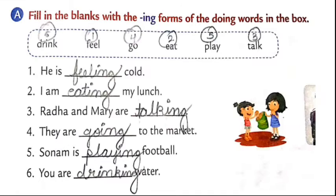Now open page number 61 and see exercise A: fill in the blanks with the ing form of the doing words in the box. Some doing words are given — you have to fill the correct doing word in the blank and add ing to it. The first one: he is dash cold. Feel will come, and adding ing gives feeling — he is feeling cold. The second one: I am dash my lunch — eat will come, giving I am eating my lunch.